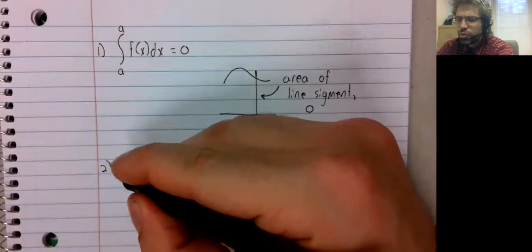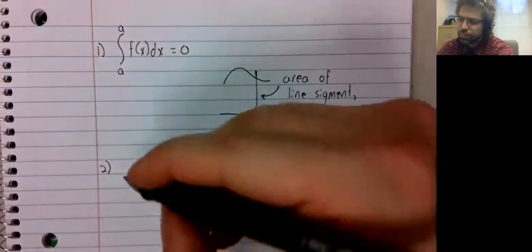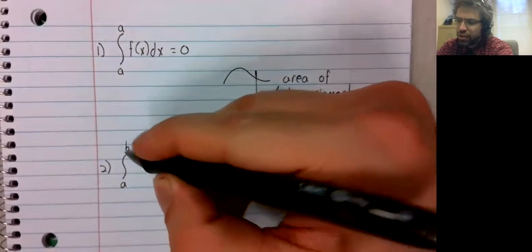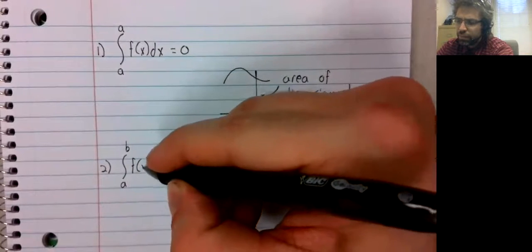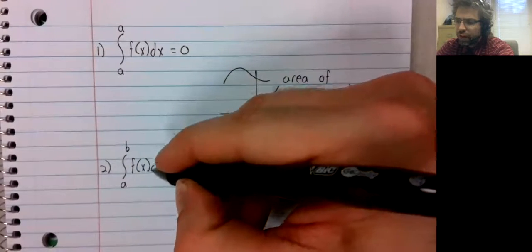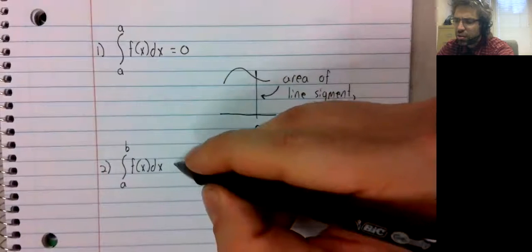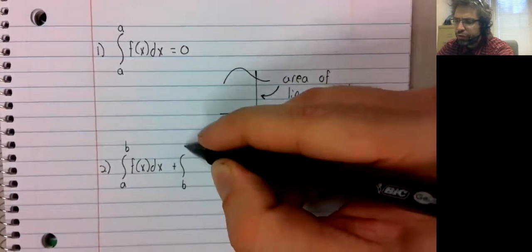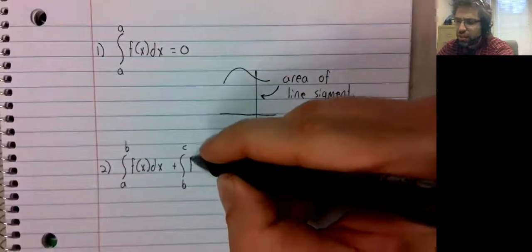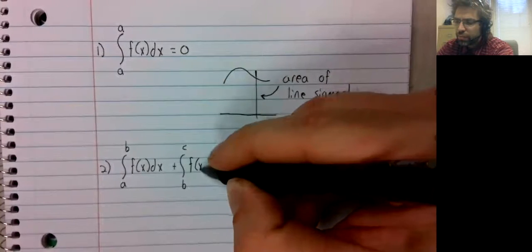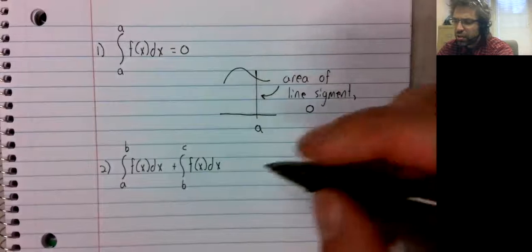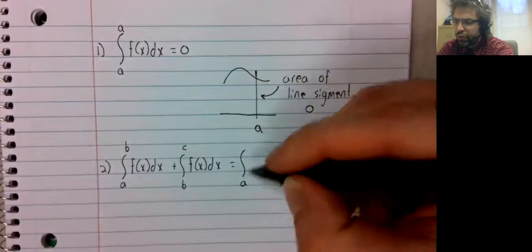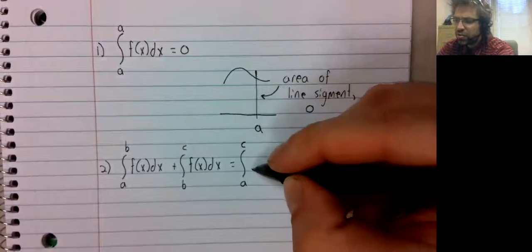Property two: the integral from a to b of f(x)dx plus the integral from b to c of f(x)dx equals the integral from a to c.